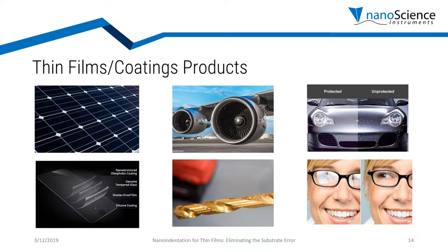On drill bits, drilling increases temperature, so we put coatings on them to increase their life and reduce the effect of temperature. A very common application is in the automotive industry — we put different kinds of coatings on cars so they last longer and stay shiny. Spectacles also have coatings to make them anti-reflective and to protect against UV. These are very common examples of thin films in our everyday life.